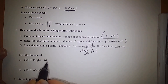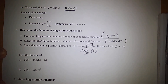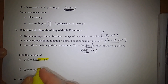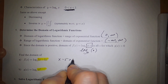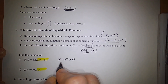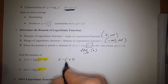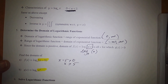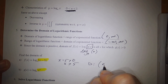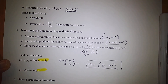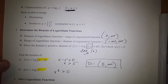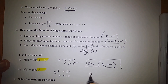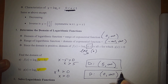Let's find the domain of two logarithmic functions. For the first, everything in the value field must be positive. So we require x minus 5 to be greater than 0, meaning x must be greater than 5. The domain is (5, infinity). For the second, x cubed must be positive, so x must be greater than 0. The domain is (0, infinity).